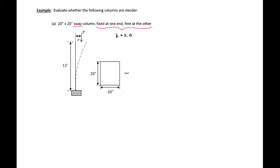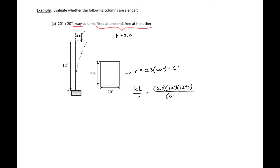We can find our r for a rectangular section as equal to 0.3 times h, so 0.3 times 20 inches gives us r equal to 6 inches. Then we can find our kL/r ratio: 2.0 times 12 feet times 12 inches per foot divided by 6 inches is equal to 48.